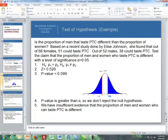So let's go through a couple of examples. Is the proportion of men that taste PTC different than the proportion of women? PTC is a piece of paper, it looks like litmus paper, but you put it on your tongue. And if you can taste something, it's a real bitter taste. Most people can taste it, but some cannot. It's something that's genetic. Based on a recent study done by Elise Johnson, she found that out of 66 females, 51 can taste PTC or the bitter taste. Out of 52 males, 38 can taste PTC. Test the claim that the proportion of men and women who taste PTC is different with a level of significance of alpha equal to 0.05.